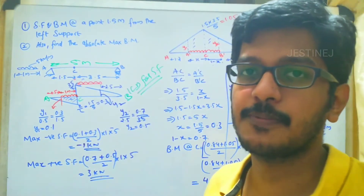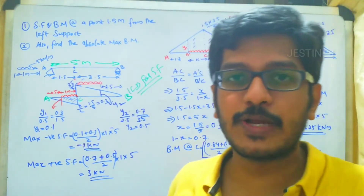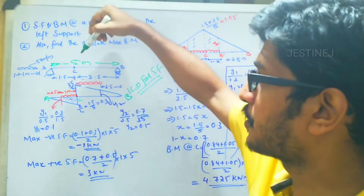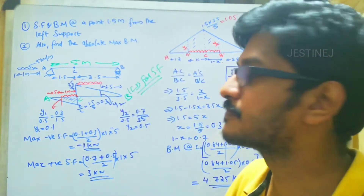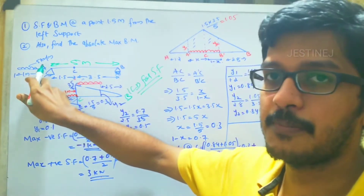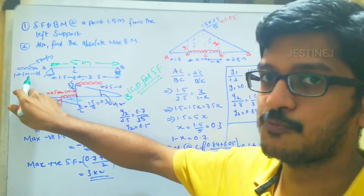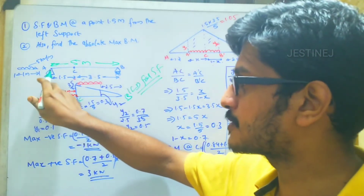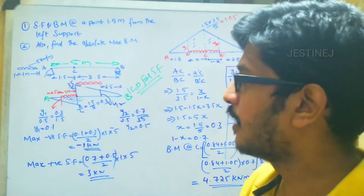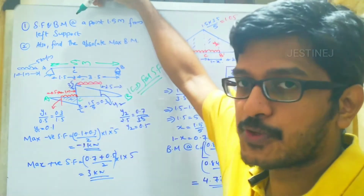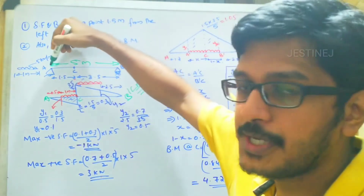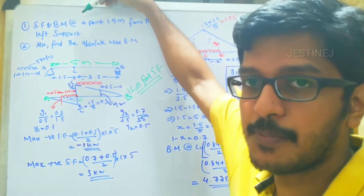Also find the absolute maximum bending moment. In this question, a simply supported beam is given with total span length of 5 meter, and a UDL of 5 kilo Newton per meter with span 1 meter is traveling from point A to point B. We are supposed to calculate the shear force and bending moment at 1.5 meter from point A.